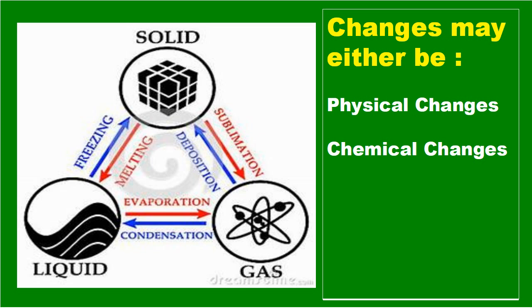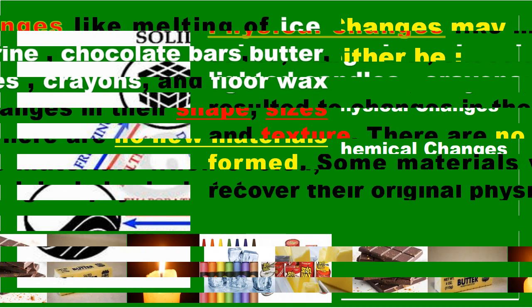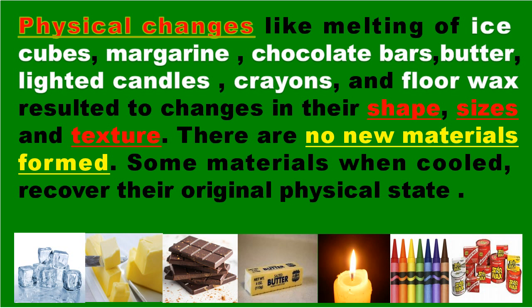These changes may either be physical changes or chemical changes. Physical changes — like melting of ice cubes, margarine, chocolate bars, butter, lighted candles, crayons, and floor wax — result in changes in shape, size, and texture. No new materials are formed.